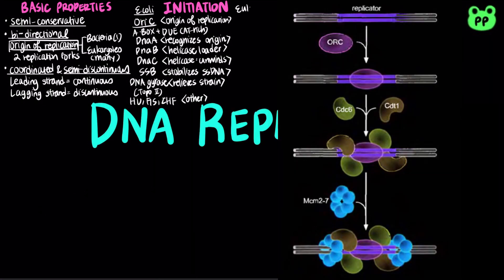The eukaryotic origin of replication is known as the ARS, which stands for autonomously replicating sequences, also known as the replicators. The ARS is recognized by ORC, or origin recognition complex.